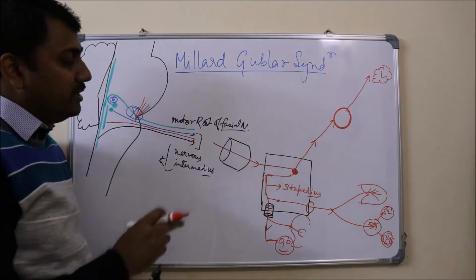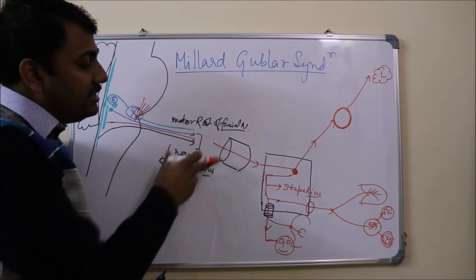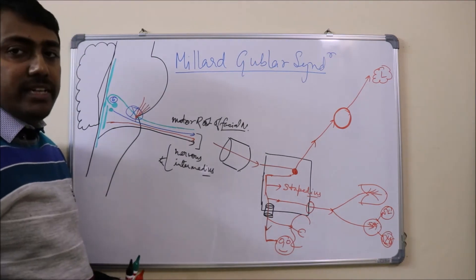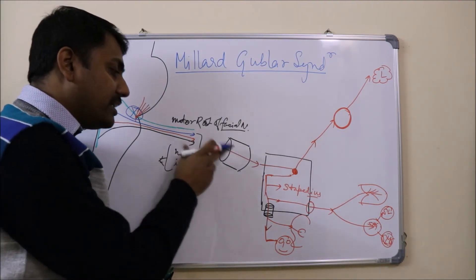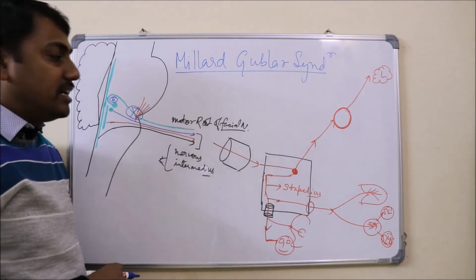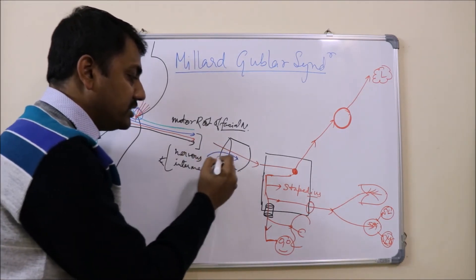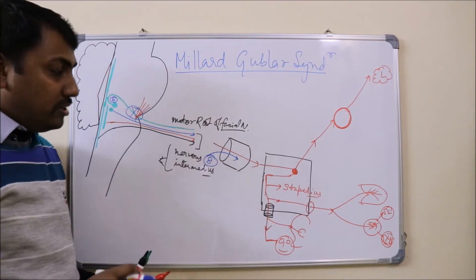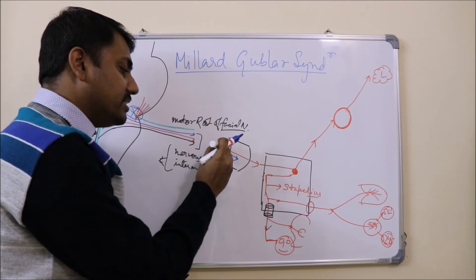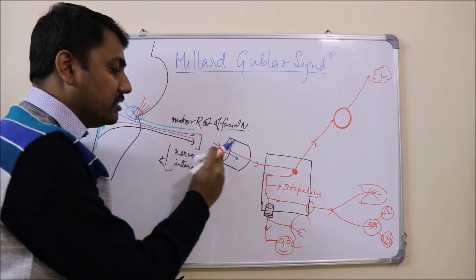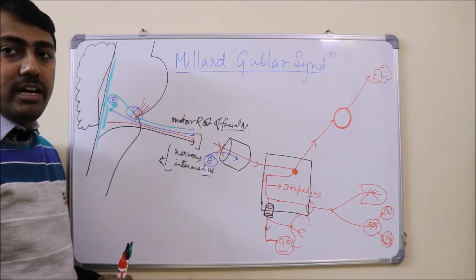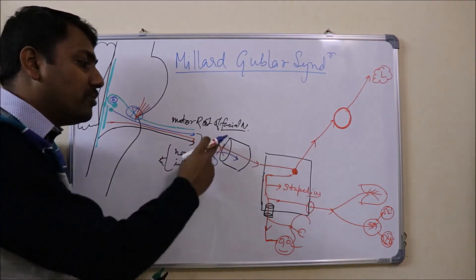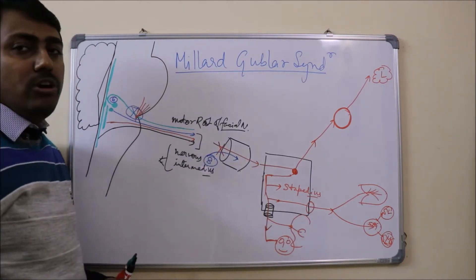Another point of injury is when the nerve enters the internal acoustic meatus. An important fact is that the eighth cranial nerve — the vestibulocochlear nerve — also passes through the internal acoustic meatus. So whenever there is an injury at this level, the vestibulocochlear nerve can also be injured, causing deafness along with the lower motor neuron features of the facial nerve.